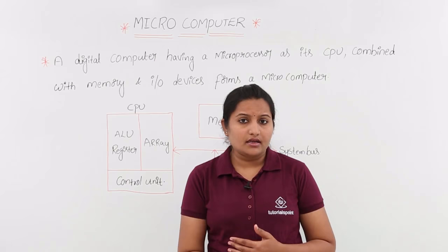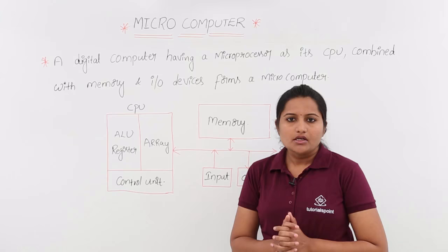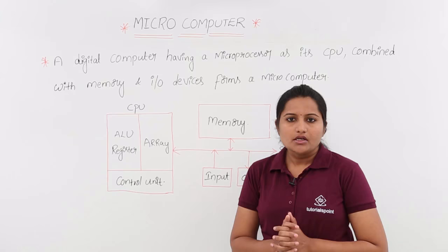From next class onwards we are going to discuss what is meant by a microprocessor. A microprocessor is nothing but the ALU, array of registers, and control unit integrated together. We will also discuss everything about the microprocessor and what is meant by a bus — here you can observe a system bus. All these we will discuss from next class onwards.